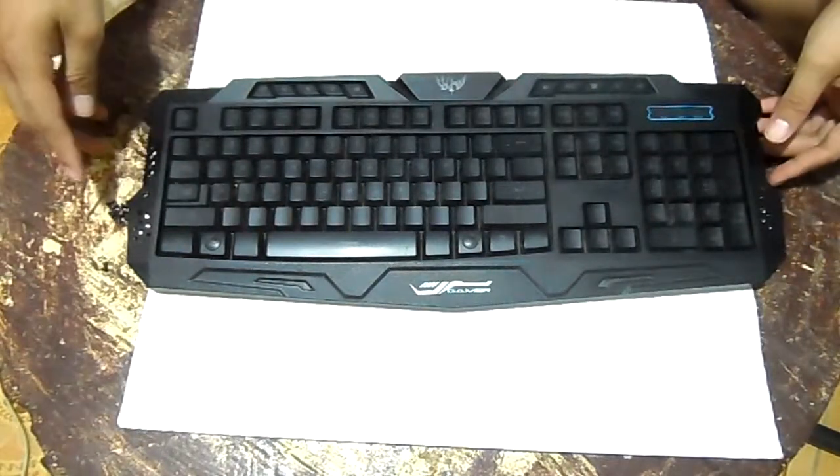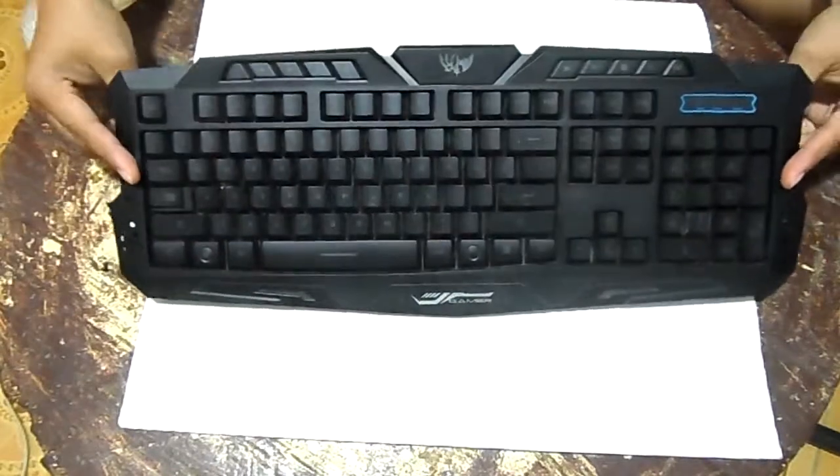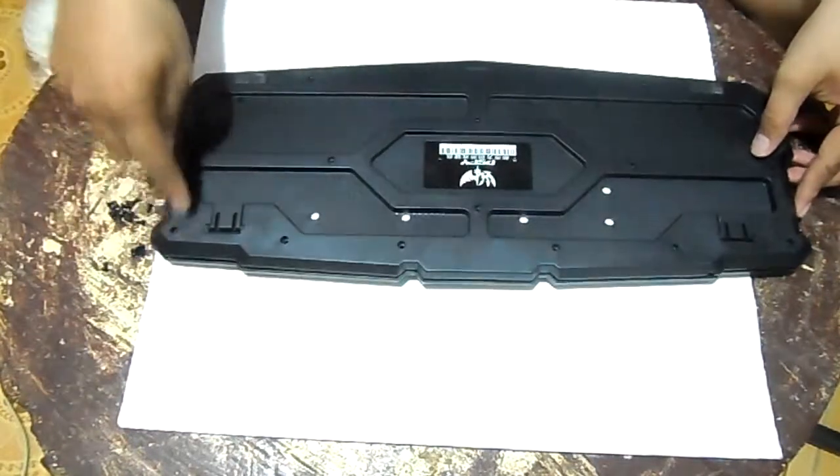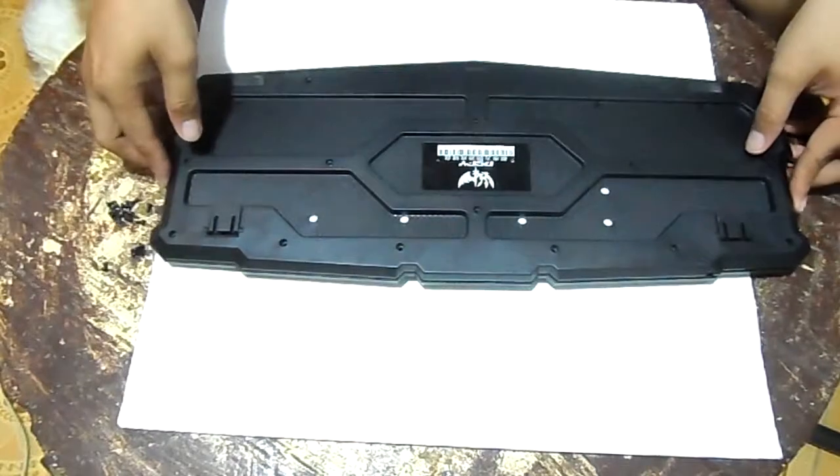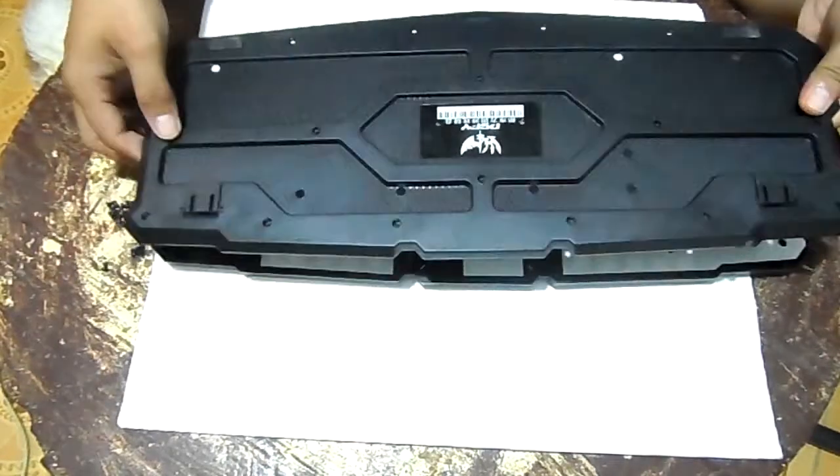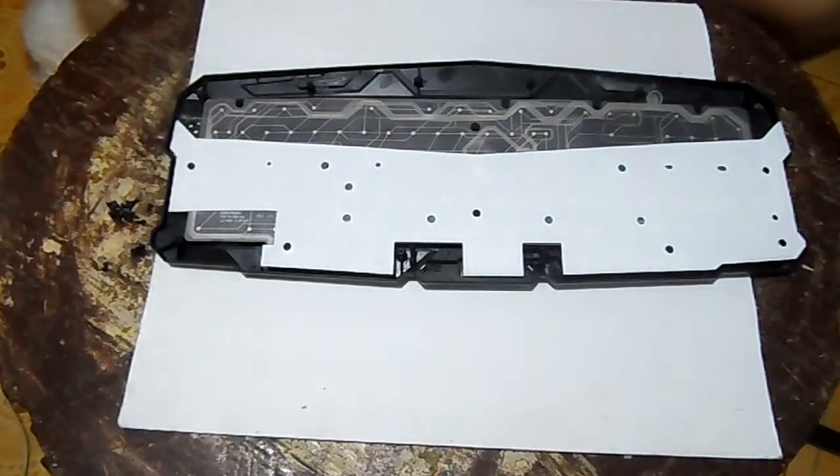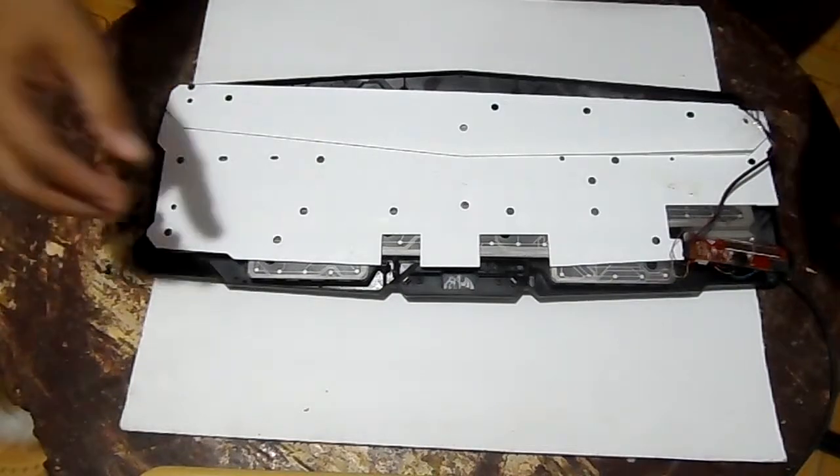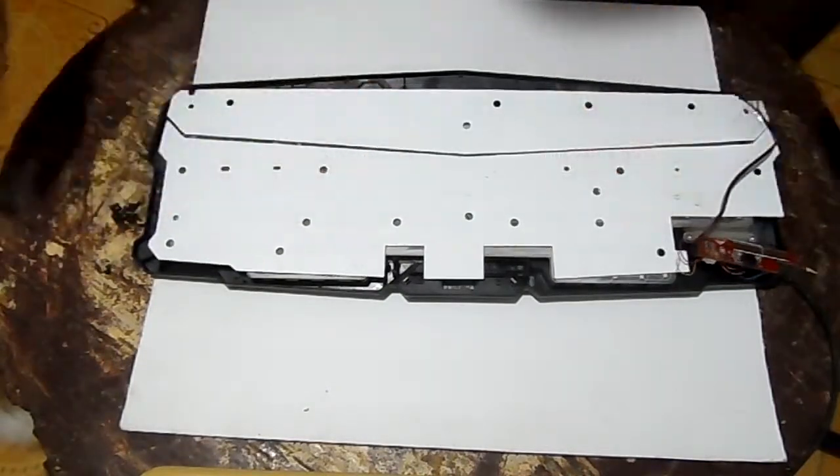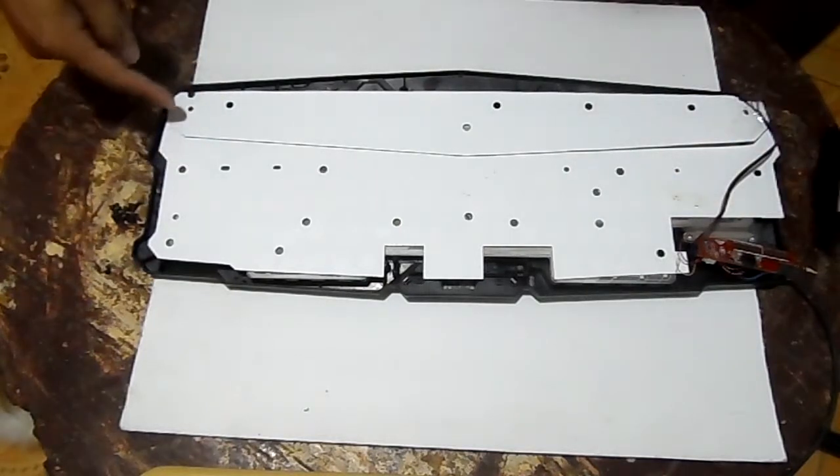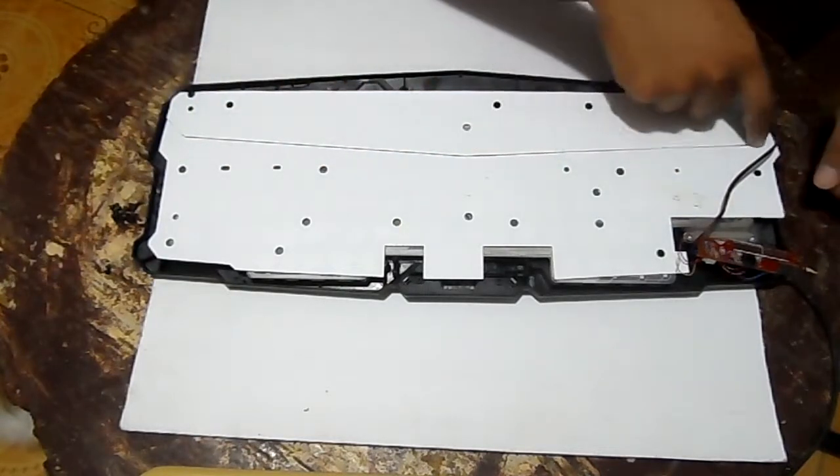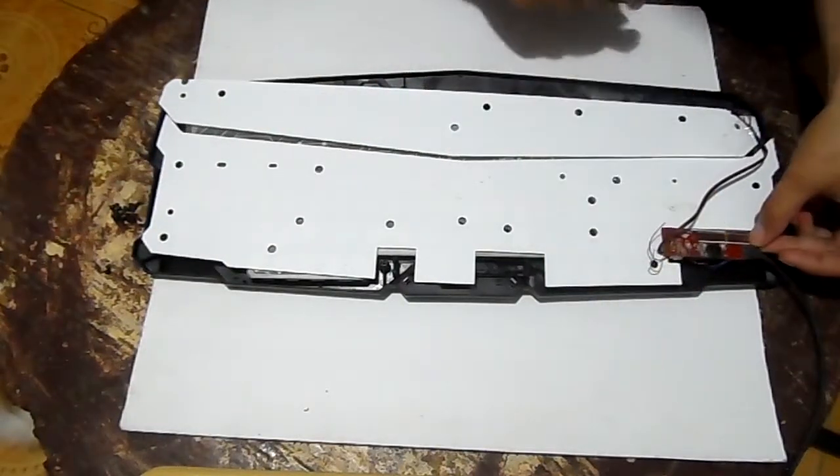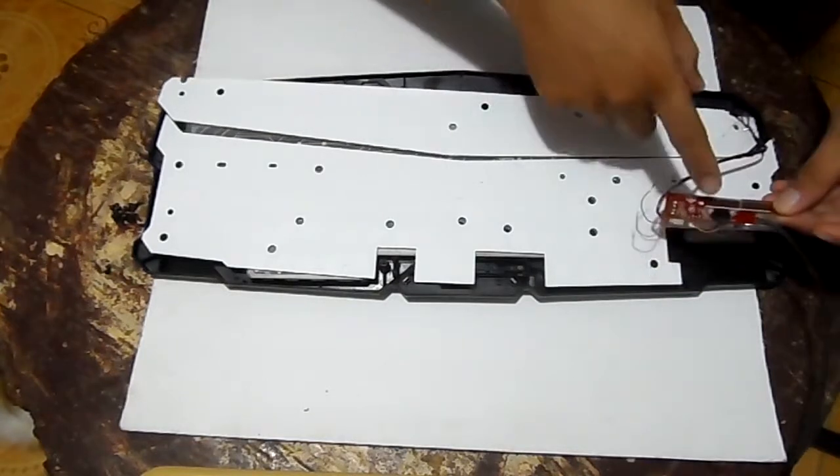This keyboard is already disassembled, so just take off the screws. Originally the keyboard looks like this inside. I have already cut this part here and the circuit board fits in here. As you can see, I already disconnected it.